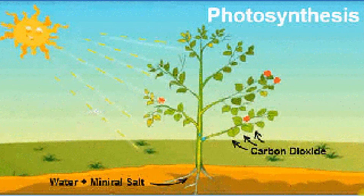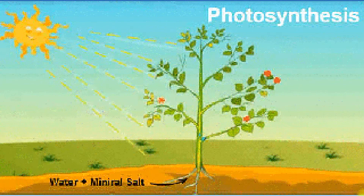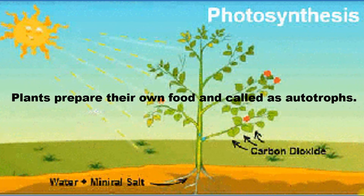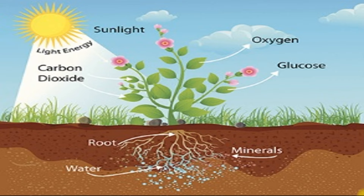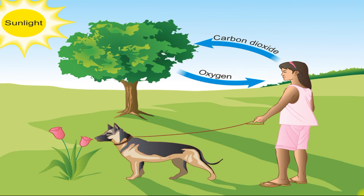Now let's see how plants prepare their food. Each part of the plant has a specific function, so plants need food too. Plants prepare their own food and are called autotrophs. Leaves contain a green pigment called chlorophyll, which absorbs energy from the sun and carbon dioxide from the air. Roots absorb water and minerals from the soil and supply them to the leaves through the stems. With all these materials, food is prepared in the leaves through a process called photosynthesis, during which glucose is produced as food for the plant and oxygen is released.